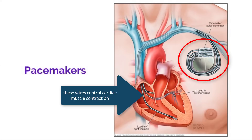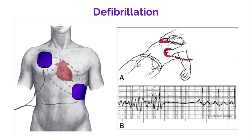If a person's heart stops beating, a technique known as defibrillation can be done in an attempt to reset the electricity in the heart to get it beating again. This is done through a machine called a defibrillator. Placing two pads on the thoracic cavity that align with the heart, this machine sends an electrical impulse through the body and through the heart. The goal of this is to shock the heart into a normal rhythm that will be taken over by the SA node.